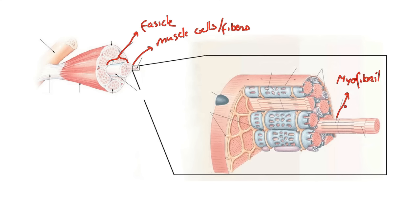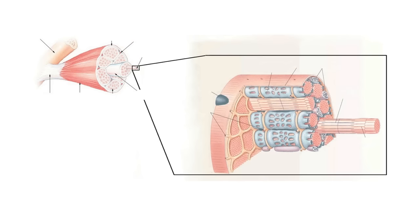We looked at the myofibrils in the previous episode and showed how they're made up of sarcomeres. A sarcomere goes from right here to here — that is one sarcomere. And as I said in the previous episode, this is the functional unit of contraction. We're going to look at how calcium ions are responsible for the contraction of the sarcomere and see an animation of how that contraction looks.